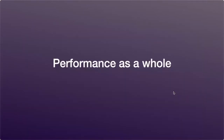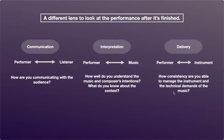What is performance as a whole? Performance as a whole is basically looking at a different lens to view the performance after it's finished. It has three criteria: communication, interpretation and delivery. Communication has to do with the connection between the performer and the listener — how you are communicating with the audience. Interpretation has to do with the performer and the music — how well you understand the music and the composer's intention, the context, meaning, character and mood of the song. Delivery has to do with the performer and the instrument, specifically how consistently the candidate is able to manage the voice and the technical demands of the music.